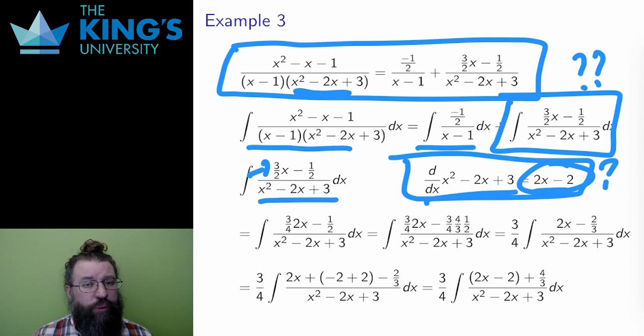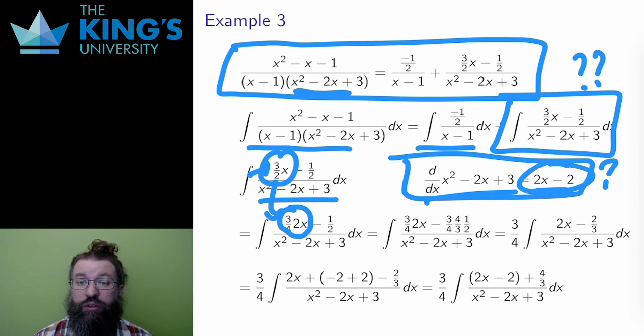So first, I want 2x, but I have 3 over 2x. Well, I can write 3 over 2 times x as 3 over 4 times 2x. I've multiplied by 2 and divided by 2, which changes nothing, but it does get a 2x here, which is good.